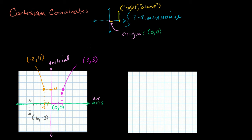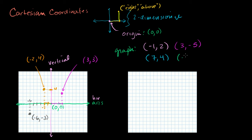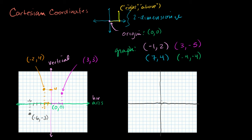Now let's go the other way — let's actually graph some points. Let's say I want to graph: minus 1, 2; the point 7, 4; the point 3, minus 5; and the point minus 4, minus 4. So I have to specify my origin first. Let me draw some axes. That's my horizontal axis and this is my vertical axis. The coordinate for the center, the origin, is just 0, 0.